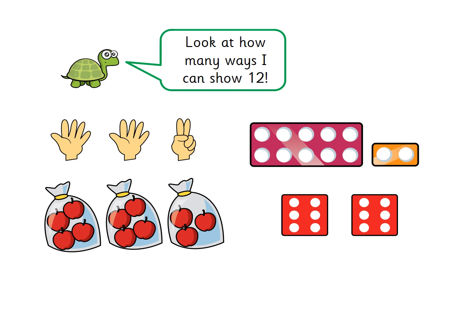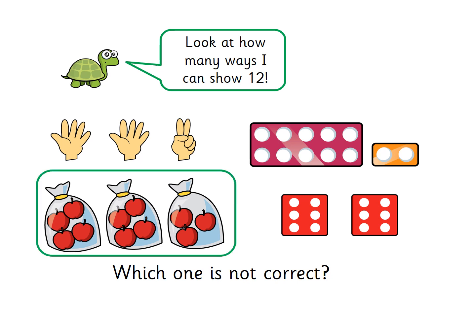Now the apples: he's got 3 bags — 4 in the first, 4 in the next, and 3 in the last. Let's count them all: 1, 2, 3, 4, 5, 6, 7, 8, 9, 10, 11. He has only made 11, not 12! He needs to add one more to that last bag. So the apples are not correct — that one gets a big cross — but all the others correctly show 12.